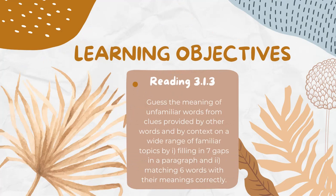Our learning objective for today is going to be about Reading Skill 3.1.3, where you need to guess the meaning of unfamiliar words from clues provided by other words and by context on a wide range of familiar topics — first, by filling in 7 gaps in a paragraph, and second, by matching 6 words with their meanings correctly.